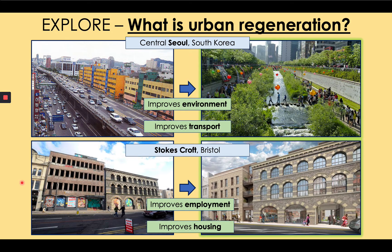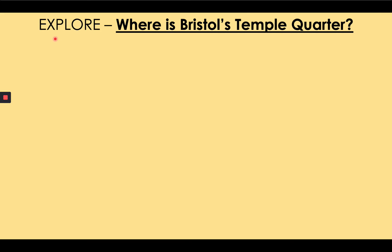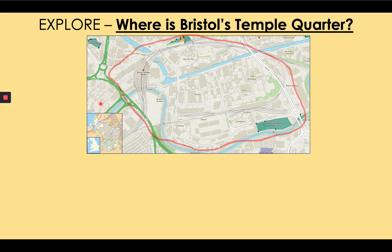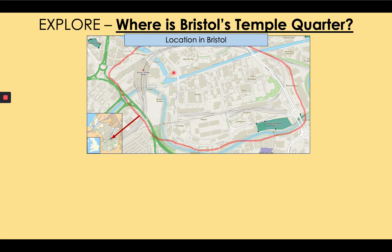We're going to focus on a part of Bristol called Temple Quarter. It is located in pretty much the dead centre of Bristol, shown by the red section on the map, along the River Avon and the canal in the northern part. At the very western side is Bristol's main train station, Temple Meads, more than 100 years old. The central area is a former industrial area with warehouses, factories, the old post office sorting building, and a gas station. This is one of Bristol's biggest brownfield sites.